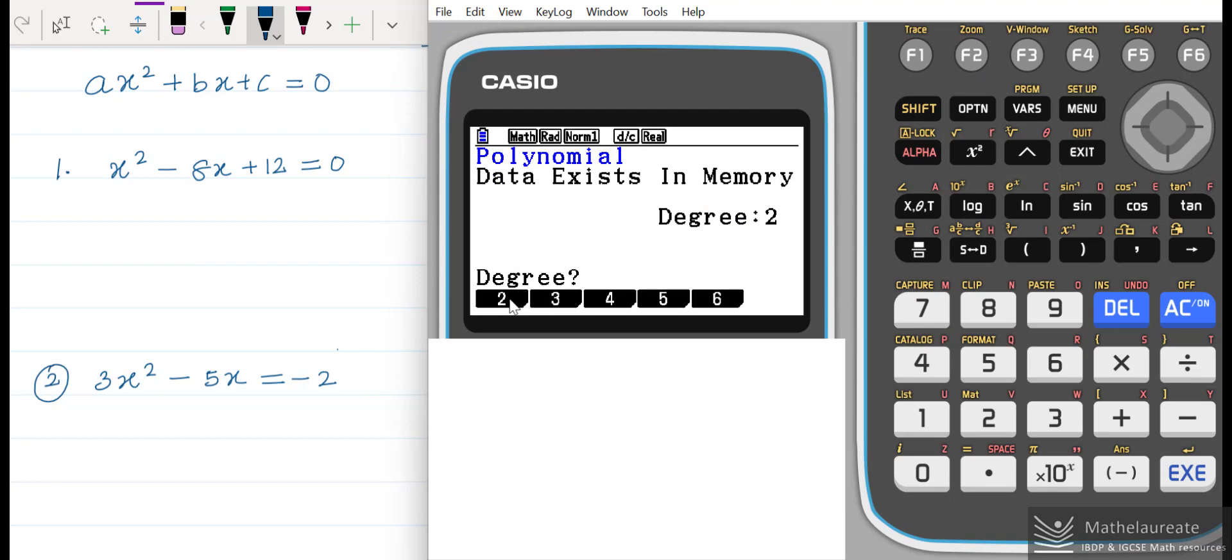Here there are degrees for polynomial: second degree, third degree, fourth degree. Different degree polynomials you can solve. Since it's a quadratic, we need to choose degree 2. Press F1 to choose degree 2.